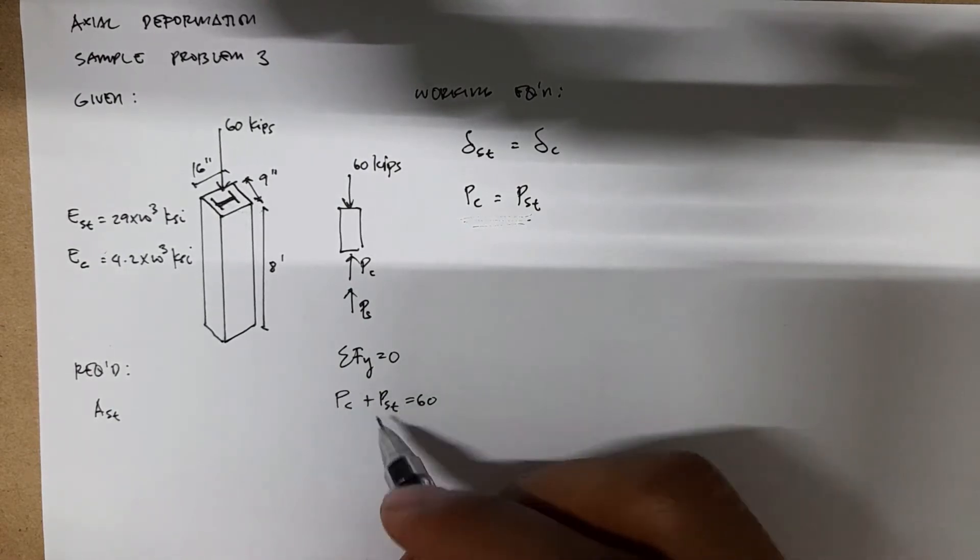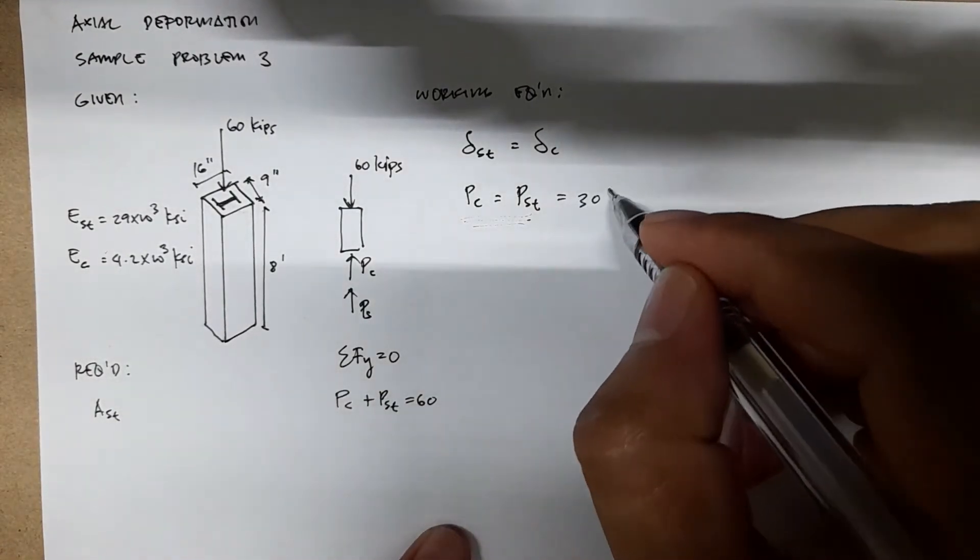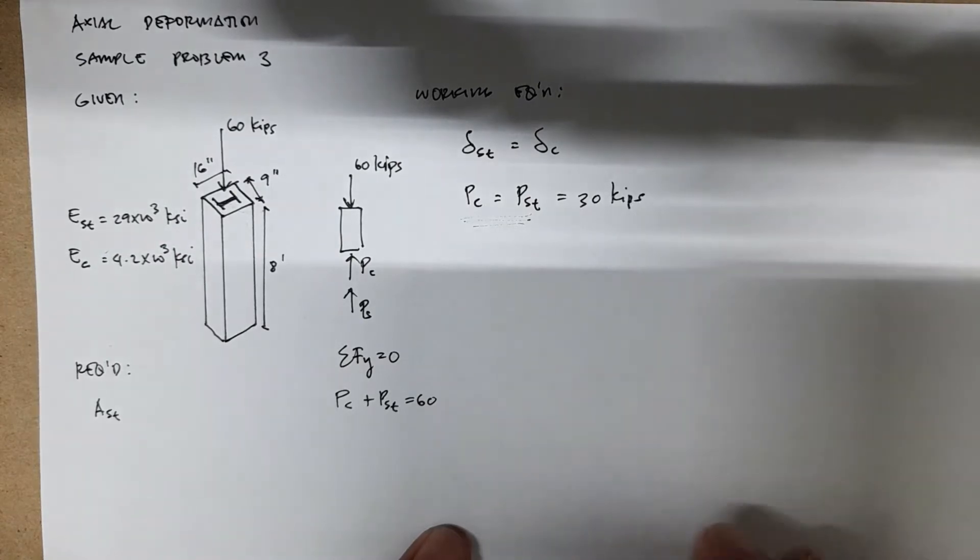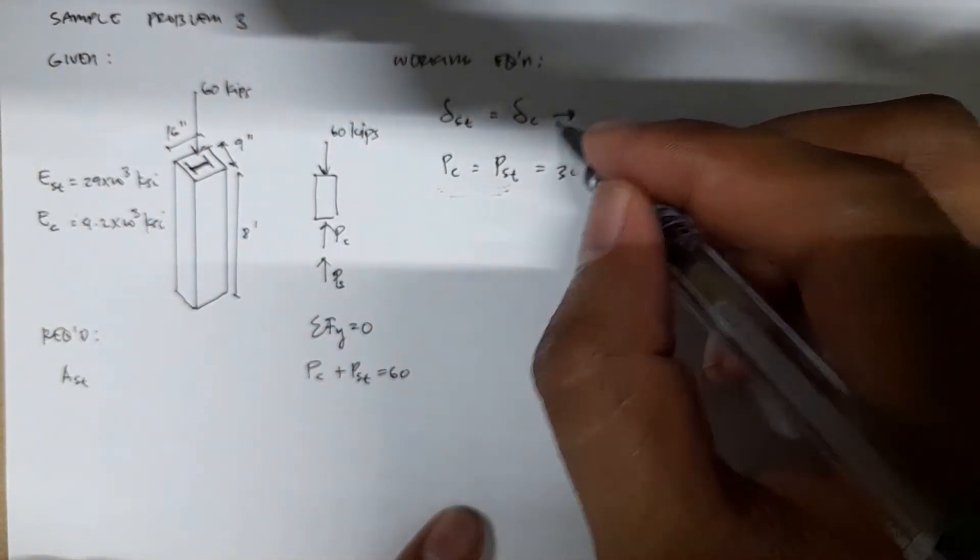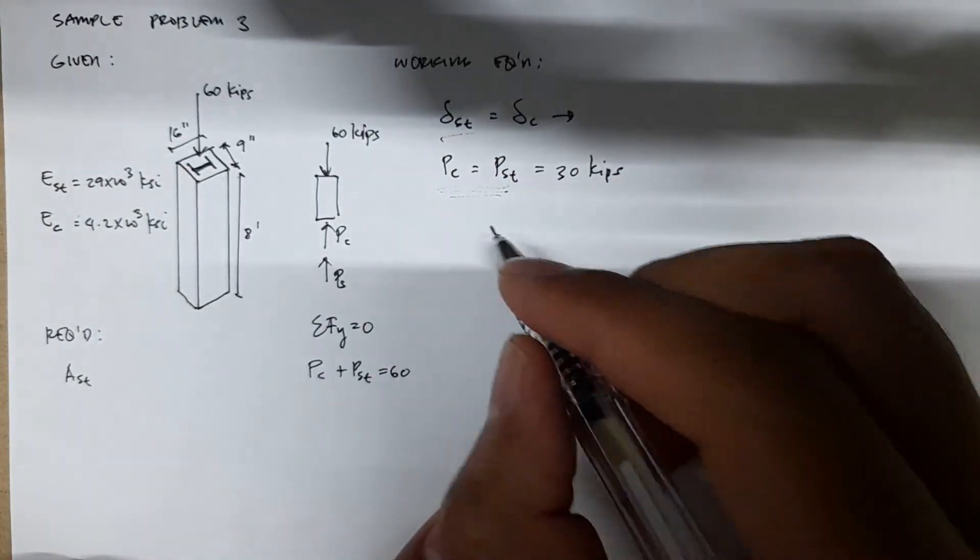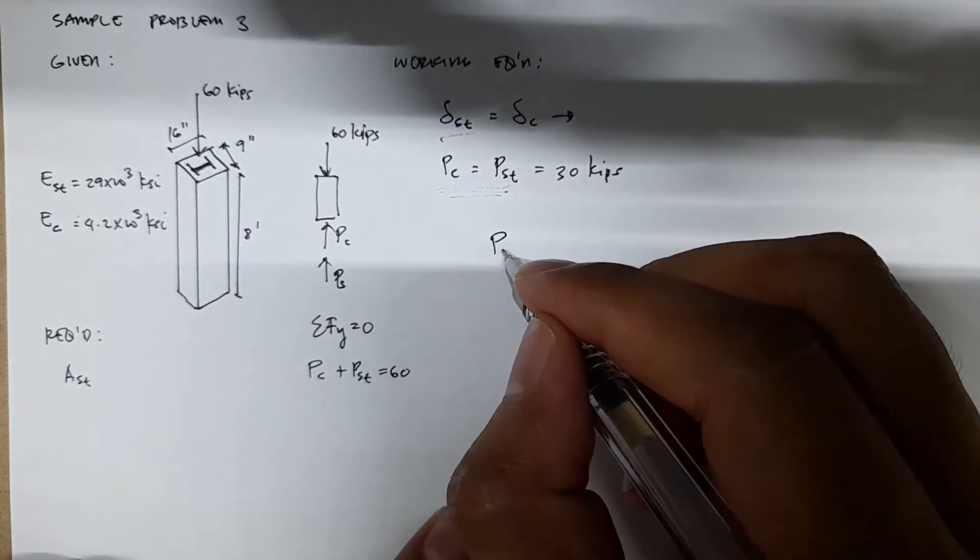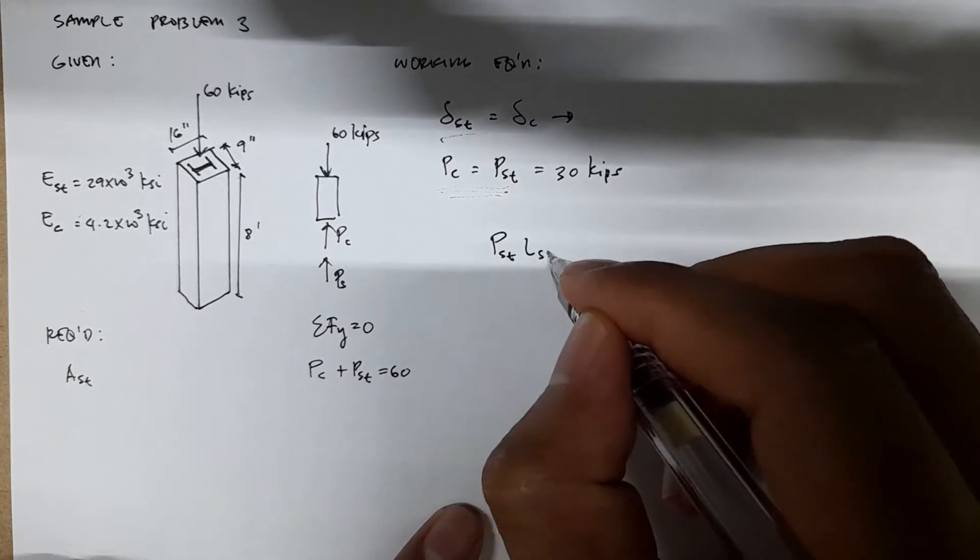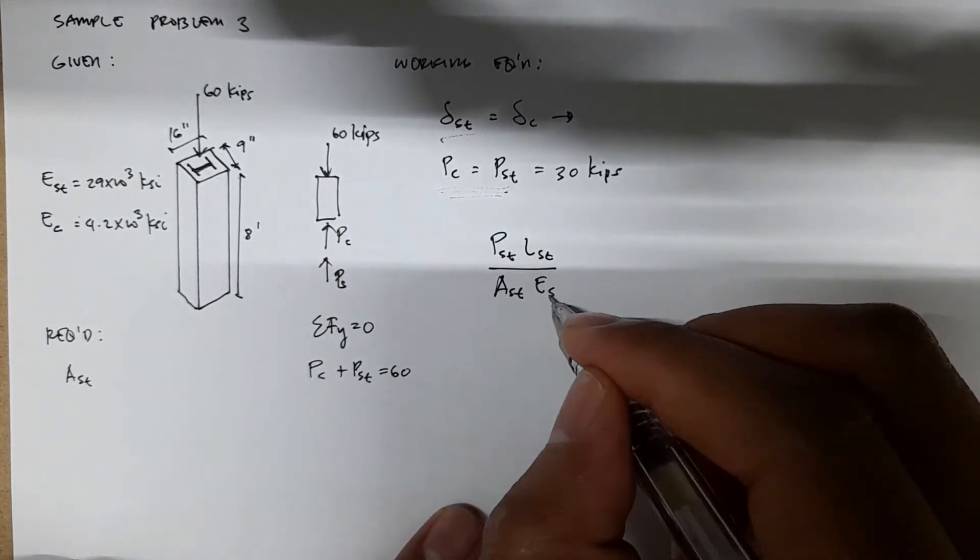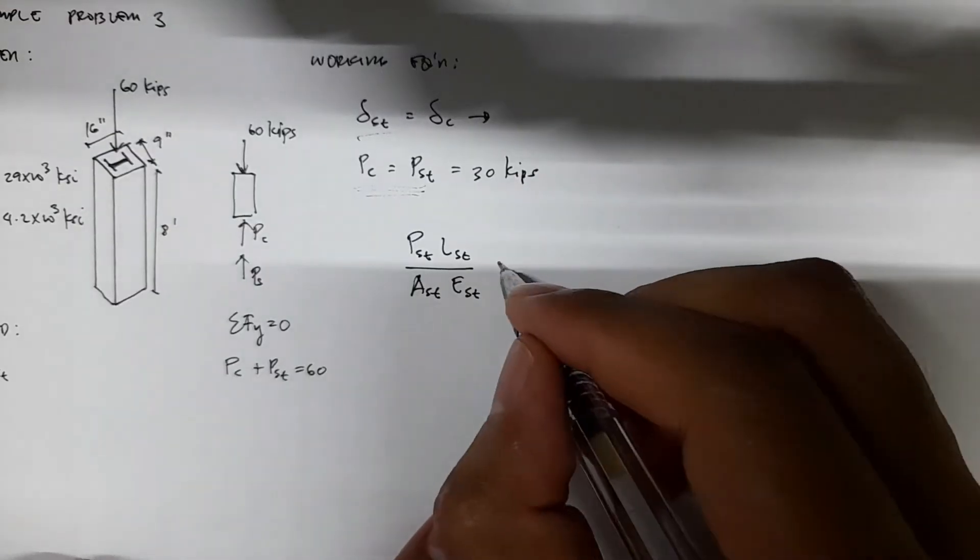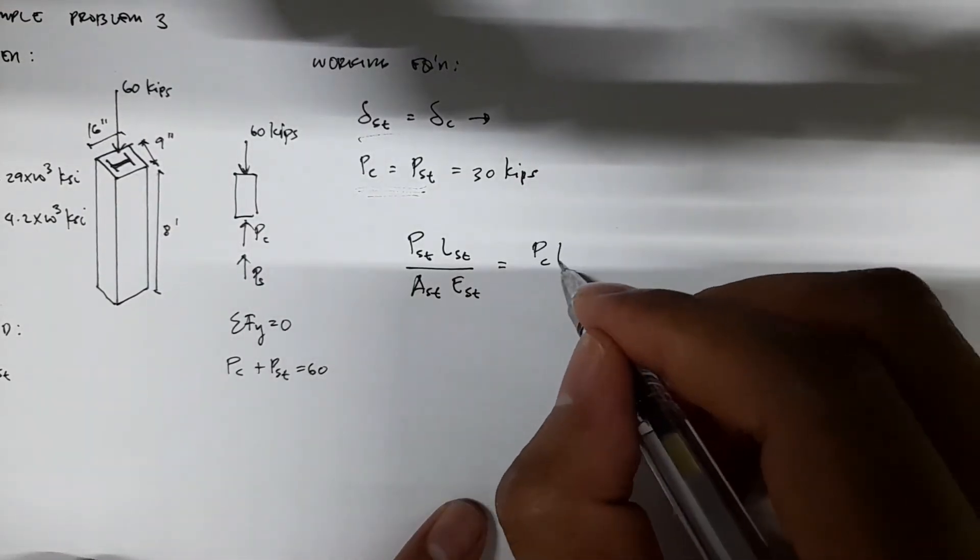Since we are treating these forces as equal, we have 30 kips for each. Let's continue with the deformation equation: Pst × Lst over Ast × Est equals Pc × Lc over Ac × Ec.